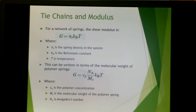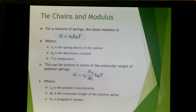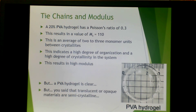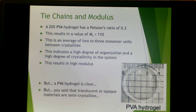For a network of springs where tie chains act like springs, the shear modulus G is given by G = N_s · k_B · T, where N_s is the spring density, k_B is the Boltzmann constant, and T is the temperature. This can also be written in terms of molecular weight of polymer springs as G = (C_p · R · T) / M_s, where C_p is the polymer concentration, M_s is the molecular weight of the polymer spring, and N_A is Avogadro's number. For example, a 20% PVA hydrogel with a Poisson's ratio of 0.3 results in an M_s of 110, meaning there is an average of 2 to 3 monomer units between crystallites — indicating a very high degree of organization and crystallinity, resulting in a very high modulus.